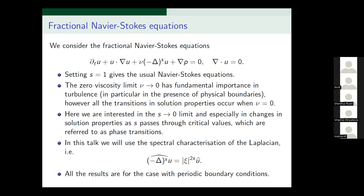From the mathematical-analytical point of view, all transitions in solution properties occur when ν becomes zero — the fundamental transition between ν nonzero and ν equals zero. The limit is therefore very singular. In this work, instead of fixing s equal to one and sending ν to zero, we fix ν in value and send s to zero from one. So you start from Navier-Stokes and converge to damped Euler, as this becomes a damping term when s equals zero. We are interested in whether changes in solution properties occur at given values of s — whether there are critical values of s.